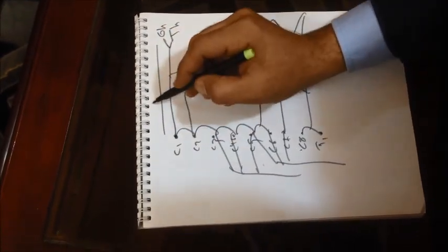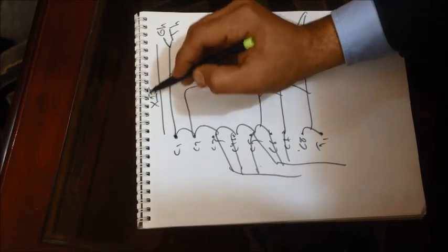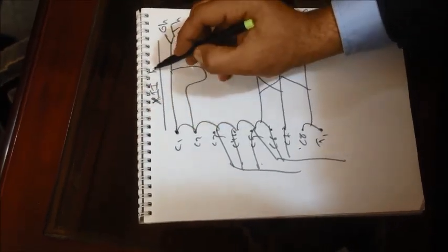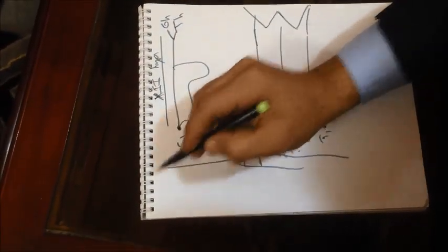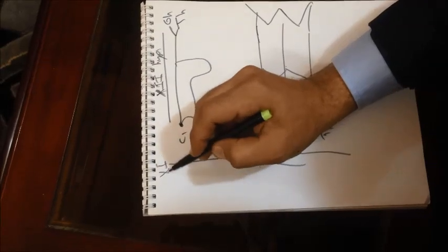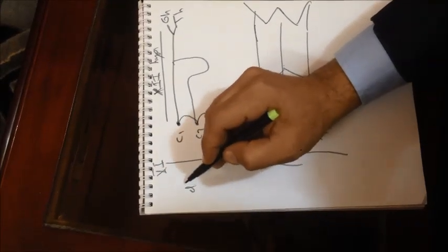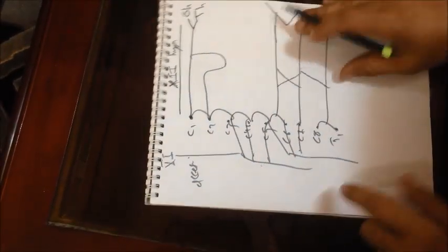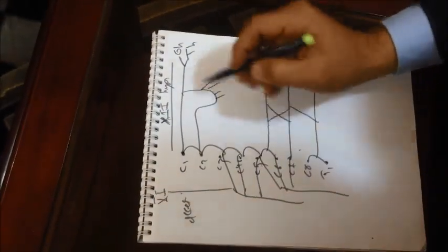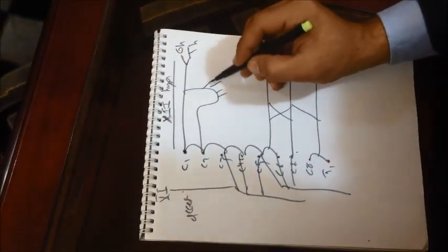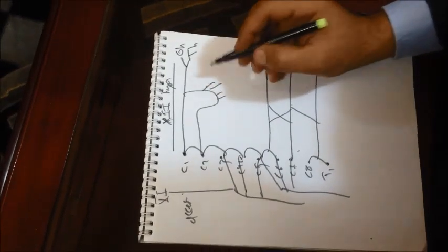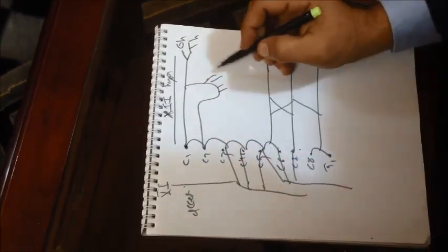Here we have cranial nerve number 12, this is the hypoglossal nerve. And here we have another cranial nerve number 11, this is the accessory nerve. Now we have 4 muscular branches from Ansa cervicalis, this is the deep one. We have 2 omohyoid and 2 sterno.